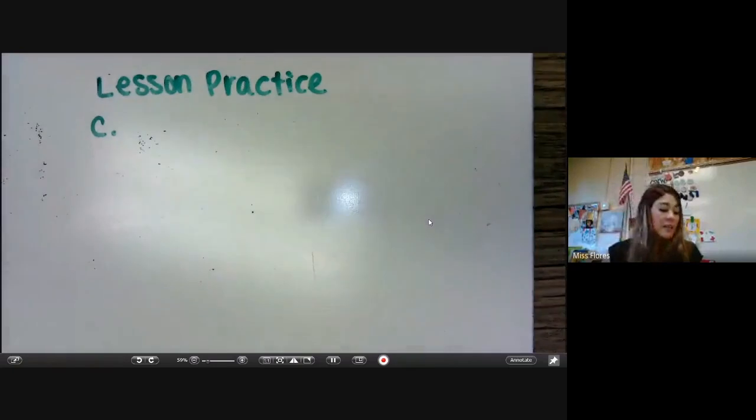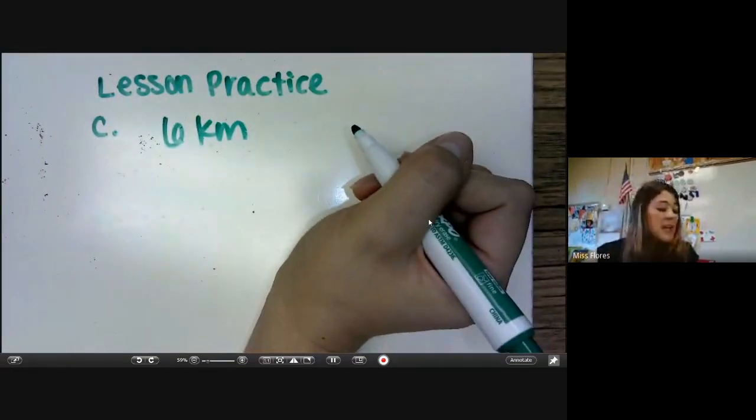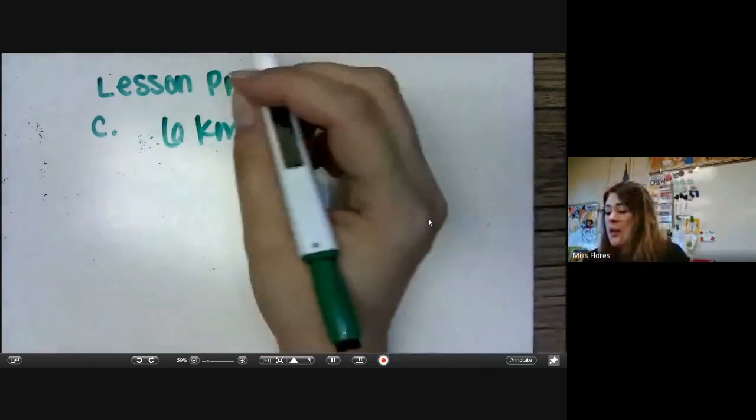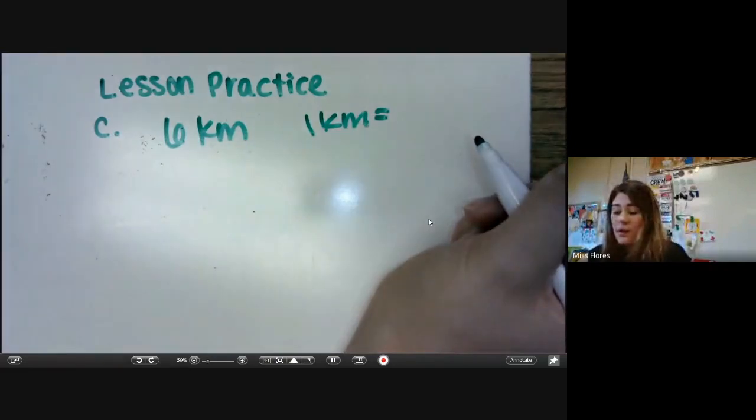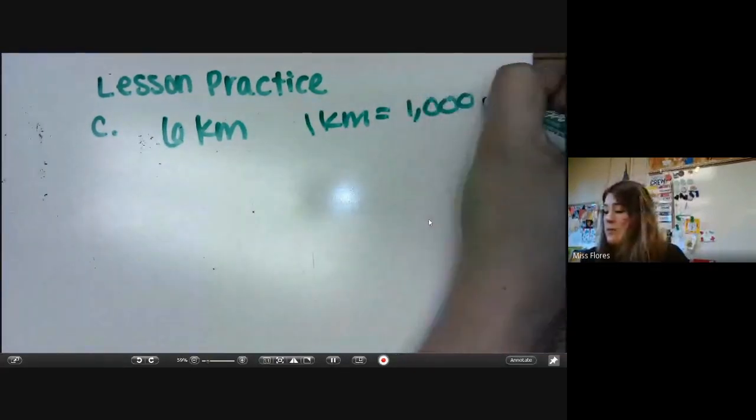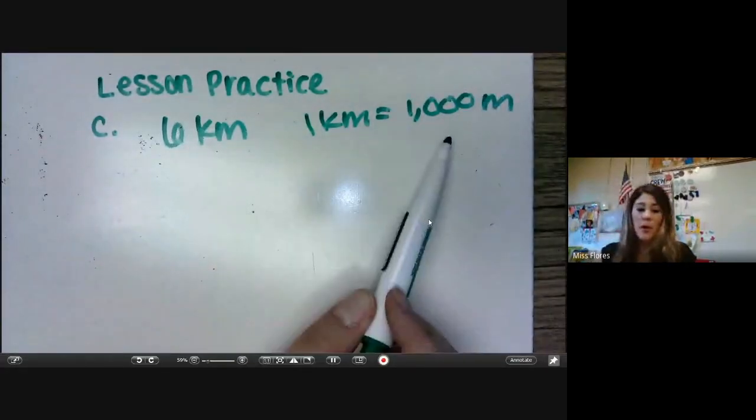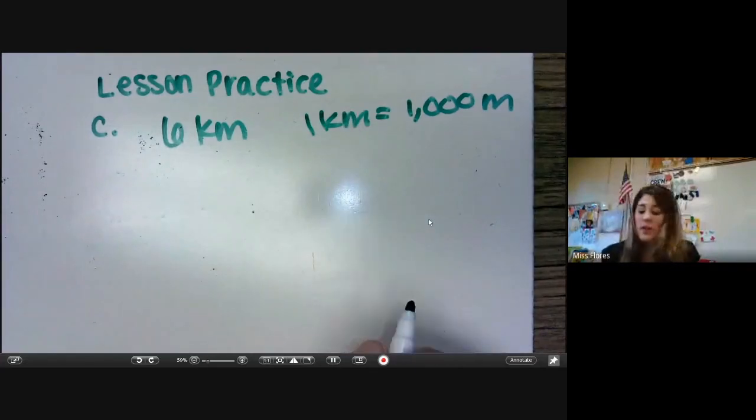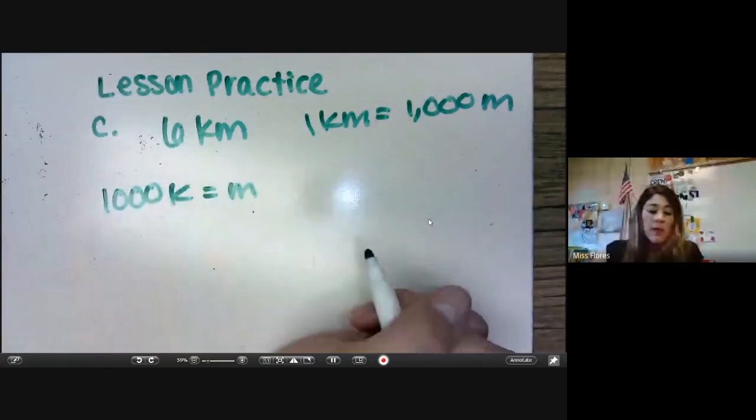Let's do lesson practice C. Lesson practice C says, Mary Beth ran six kilometers. How many meters did she run? So we know that for one kilometer, we have 1,000 meters, which means that we would need to multiply our kilometers times 1,000 in order to get that. So we need to do 1,000K equals our meters.